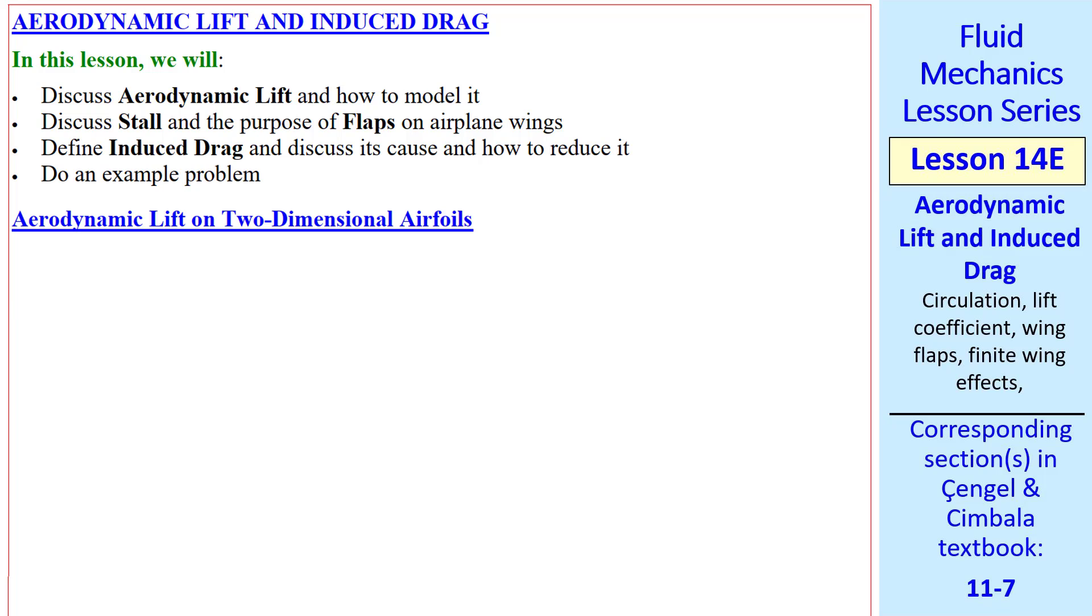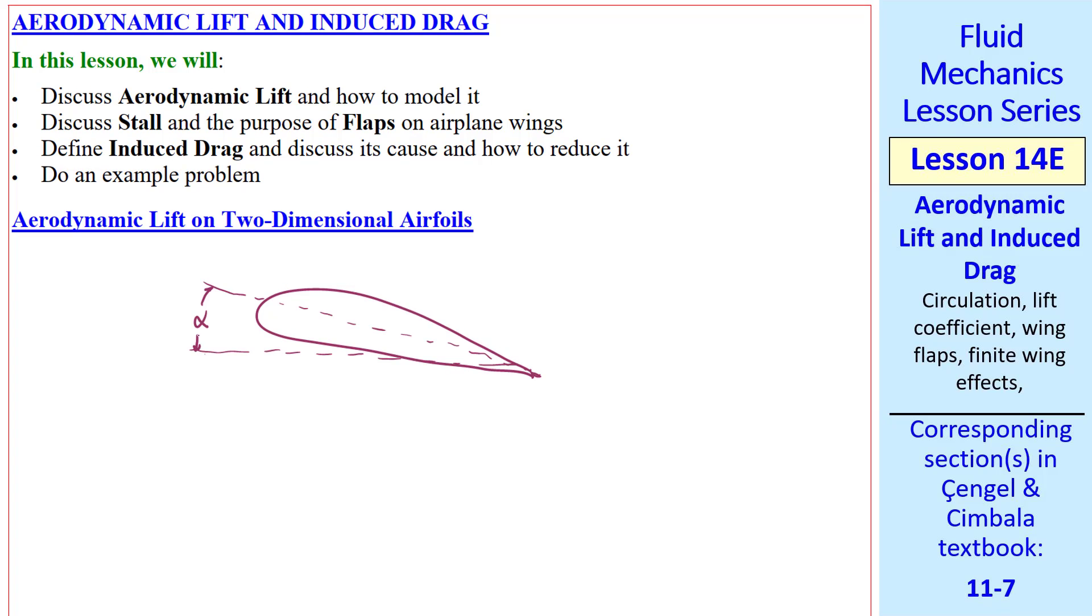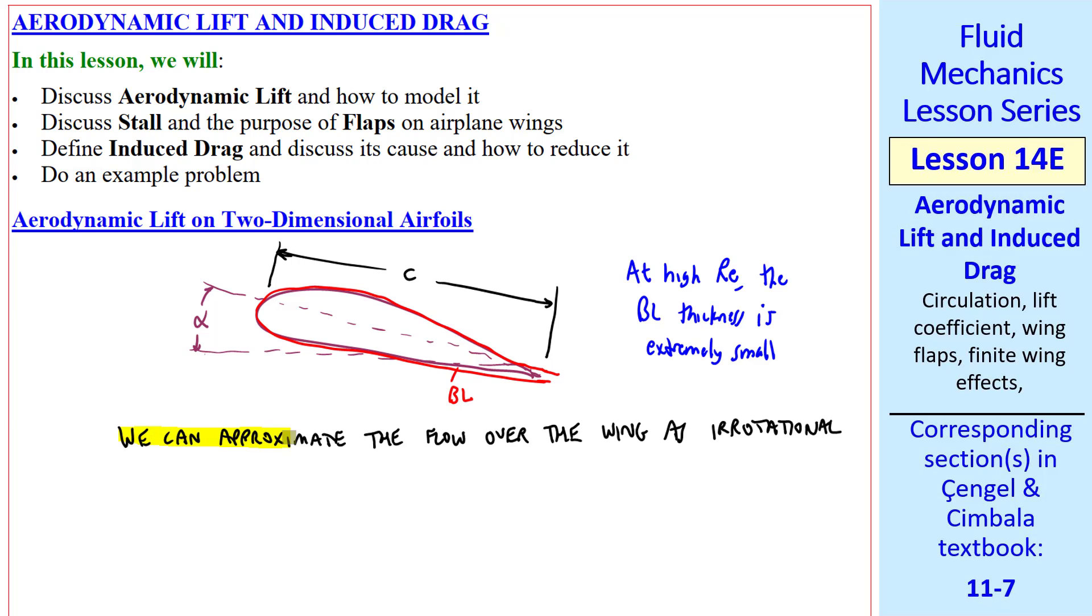First, let's consider two-dimensional airfoils. Consider an airfoil at angle of attack alpha. C is defined as the chord from the leading edge to the trailing edge. A boundary layer will grow along the surfaces and then extend into the wake. But at high Reynolds number, the boundary layer thickness is extremely small. So we can approximate the flow of the wing as irrotational.